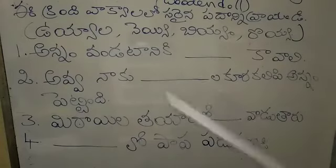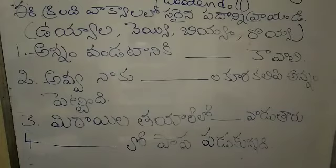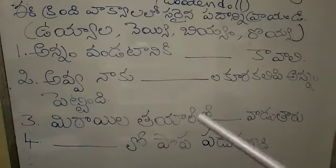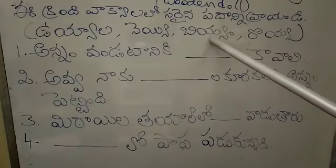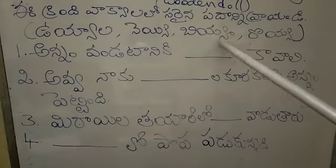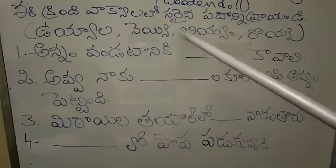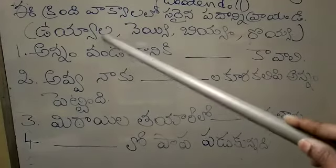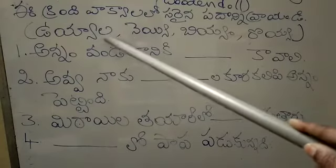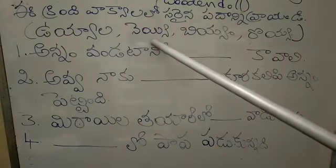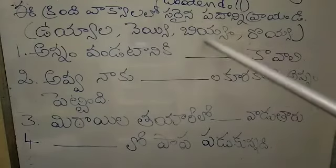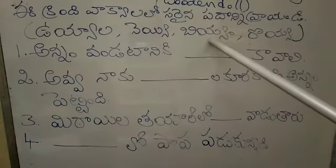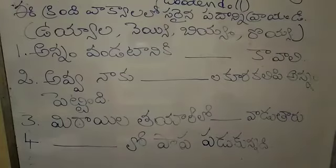See — 'Annam vanda tanuki.' Annam means rice. For cooking rice, we need biyam. Biyam means rice. Vuyala means cradle. Nayyi means ghee. Biyam means rice. Royya means prawn.